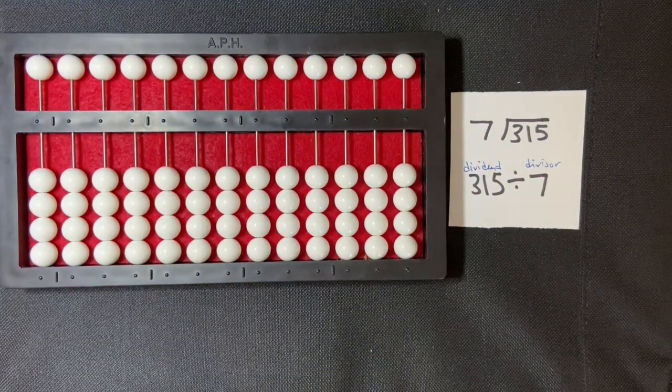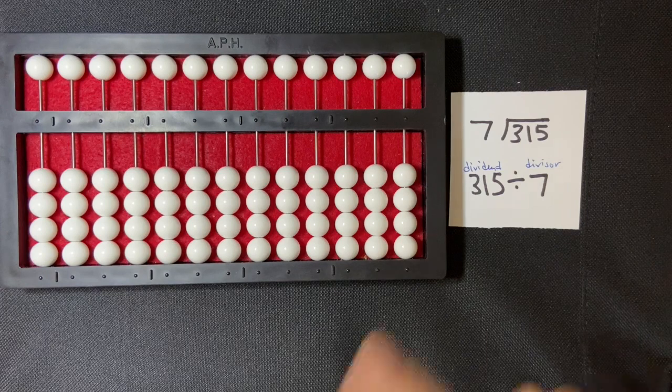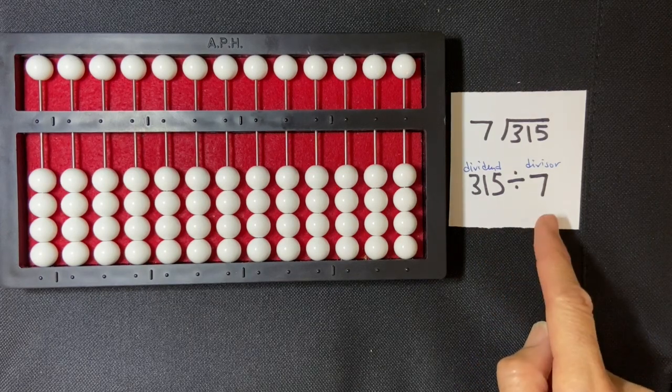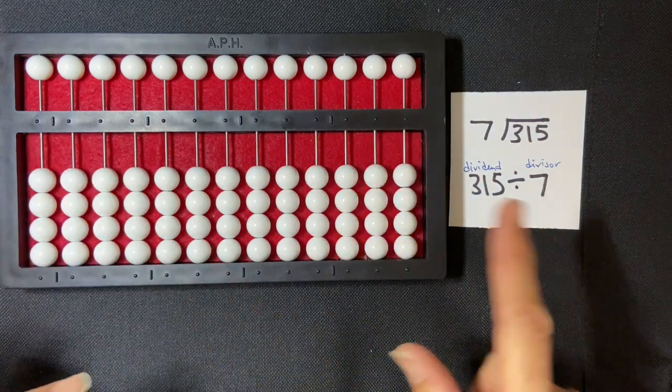Okay, I'm going to be doing a counting method division problem with a three-digit dividend divided by a one-digit divisor. So I'm going to start by setting my divisor, which is seven, in the far left-hand side of my abacus: one, two, three, four, five, six, seven.